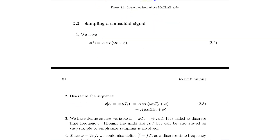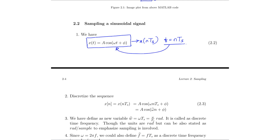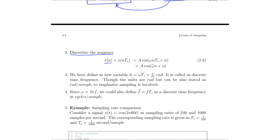Let us begin the theory of sampling. We have a continuous signal x(t) where x(t) = A·cos(ωt + φ). In order to discretize this sequence — to make x(nTs) out of it — what we have to do is substitute t with nTs. Once we plug t = nTs into x(t), we obtain the discrete sequence x(n) = A·cos(ω·n·Ts + φ). We call ω̂ = ω·Ts, which is omega times Ts, or equivalently omega divided by fs, in radians. It is called the discrete time frequency, with units of radians per sample to emphasize that sampling is involved.